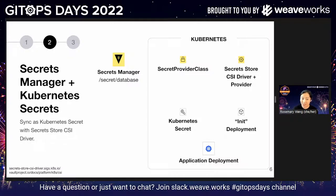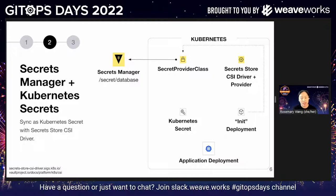One way to do this is as a Kubernetes secret, so your application doesn't really need to change. If it's still consuming a Kubernetes secret now, it will continue to consume a Kubernetes secret. From a workflow perspective, you have your secrets manager — in this case, Vault — and you create something called a secret provider class. This custom resource defines how the secret store driver and the secret store provider for your specific target secrets manager retrieves the secret. When you create a deployment, it will initialize the secret volume that's going to store the secret, and the secret store provider and driver will retrieve the information based on what the secret provider class decides.